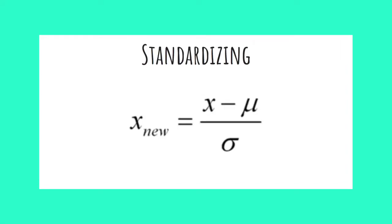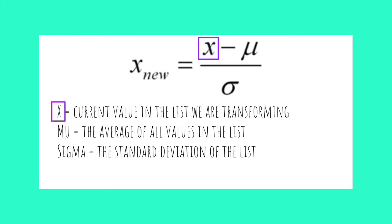The alternative method used for scaling is standardization, and this is the formula. X represents the current value you are scaling. Mu represents the average of all elements in the original list, and sigma represents the standard deviation of the original list.